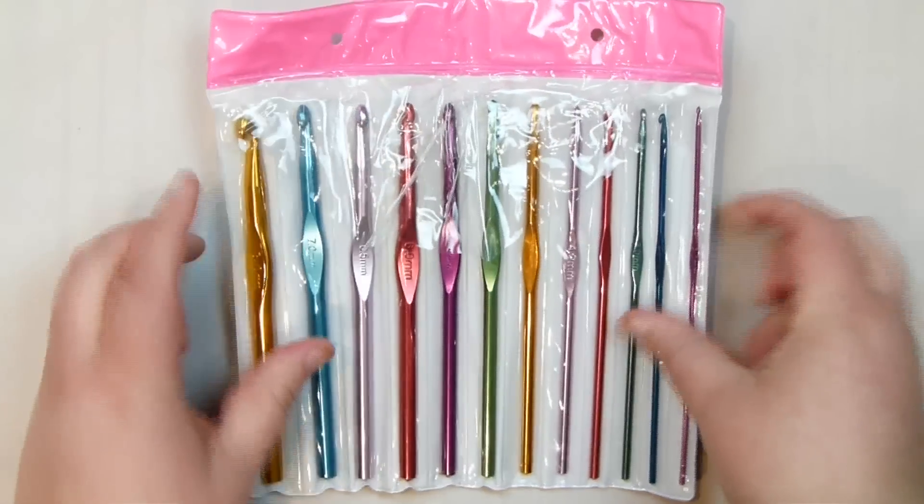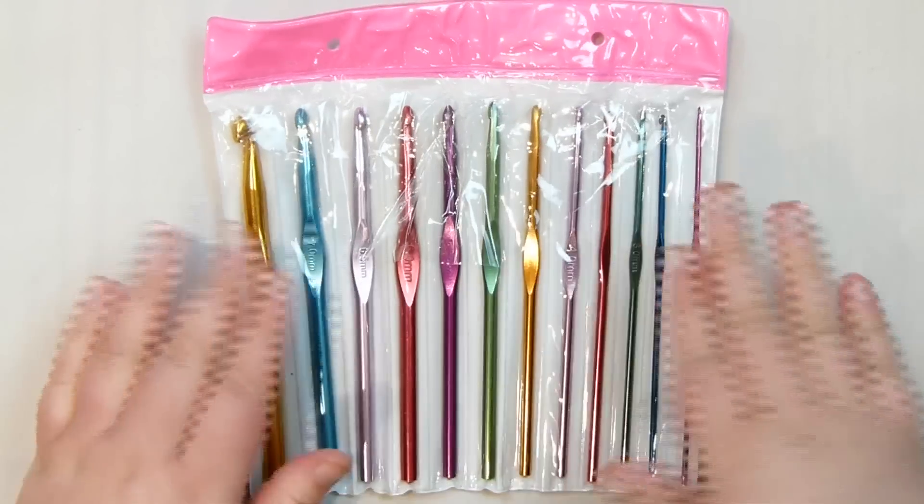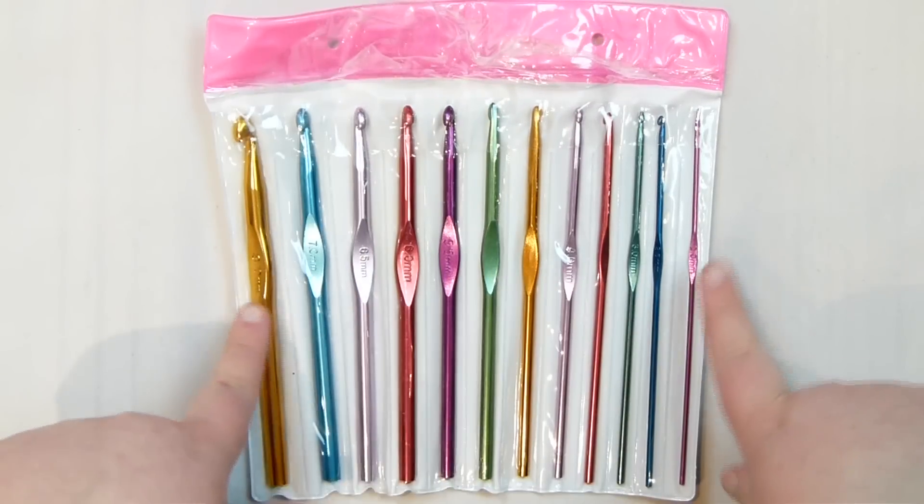So the next couple of things here are kind of some optional extras, but some things that I like to at least have handy when I need it. The first one is some crochet hooks, and this is just a cheap set that I got. So you can easily get just a cheap set like this. You have a range of sizes.